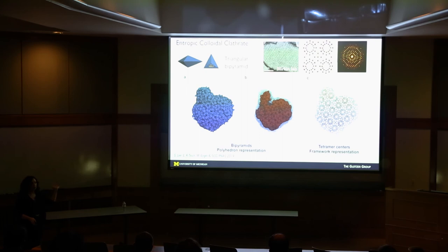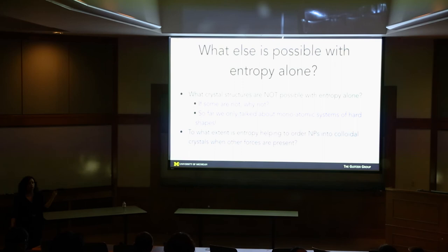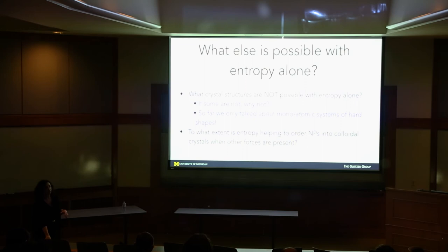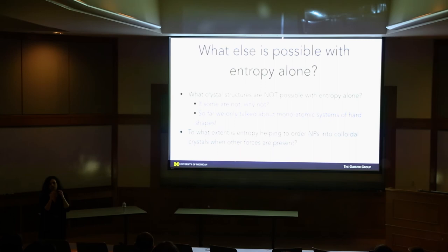We're on this insane quest to find what crystal structures we can and cannot get with entropy alone — so far only showing single-component systems with one shape. What if we mix shapes? What crystal structures become possible, and what's special about those that require more than entropy? Even in systems where we can't screen out all interactions, knowing the entropic contribution to nanoparticle assembly matters. Experimentalists ask how long or how strong to make ligands — but no one ever says 'help me engineer the entropy to get a certain crystal structure.'